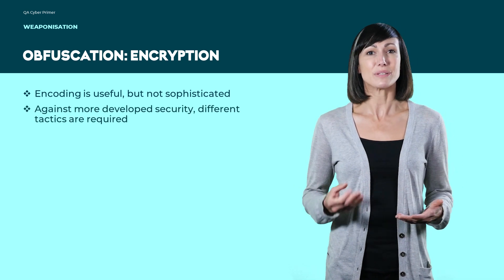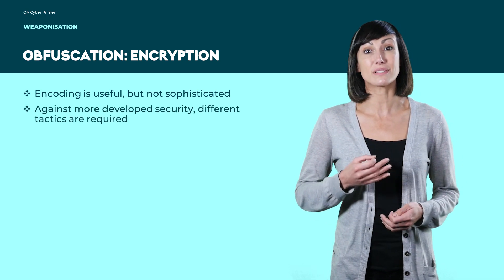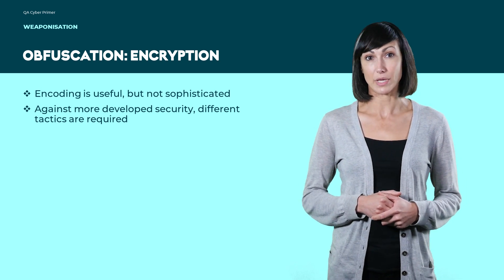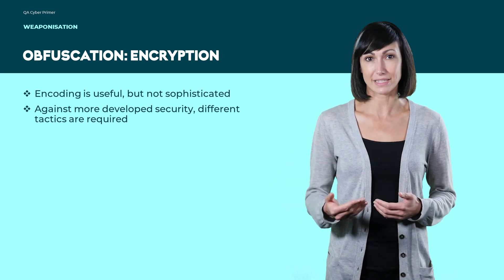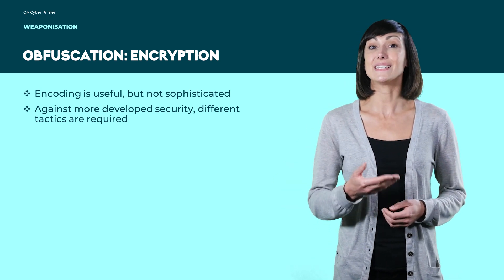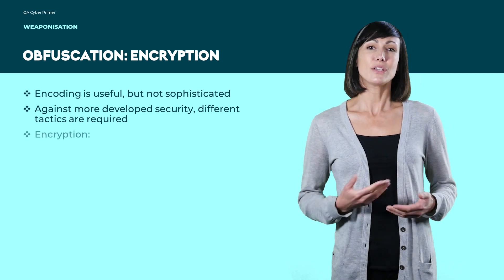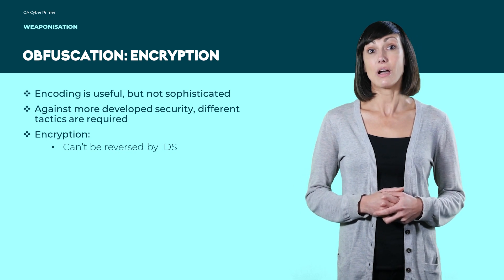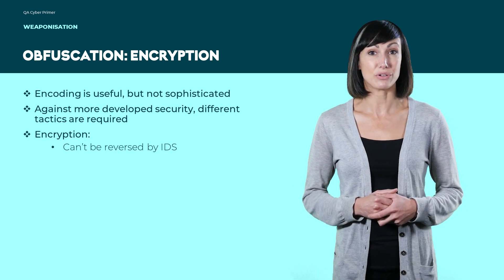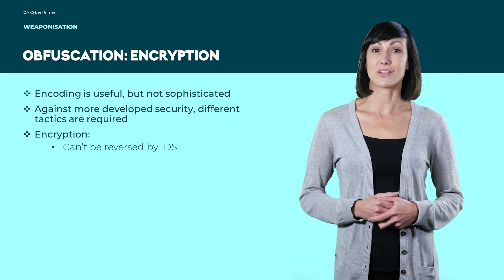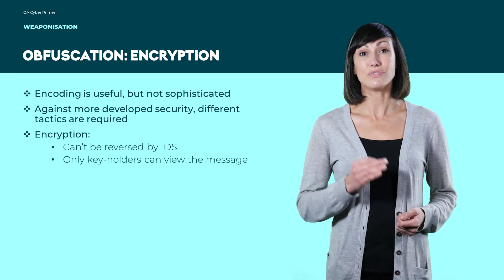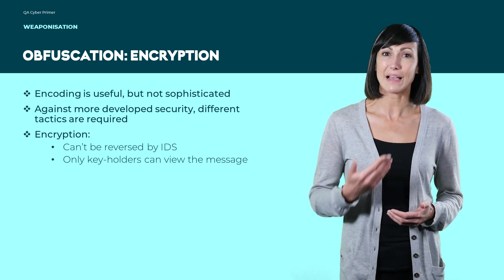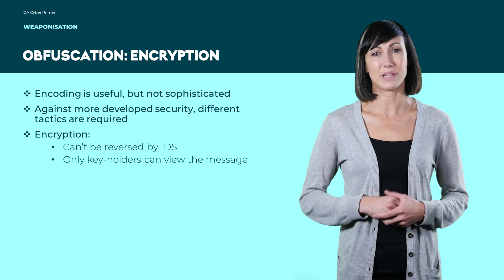Encoding is useful for avoiding systems that do not take the time to investigate unusual traffic or files. However, if a threat actor pits themselves against a developed cybersecurity capability, such as an information security operations team, they will seek to encrypt the data in transit across the network and the data at rest on disk. Encryption techniques are not reversed by IDS. Encryption hides information using an algorithm known as the cipher, and only those with a key to the cipher can view the intended message. Being able to recognize some simple ciphers will allow you to understand the mechanics behind encryption.